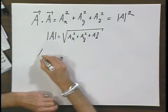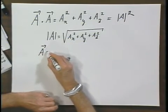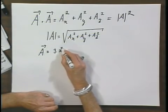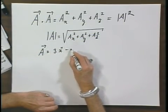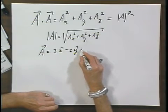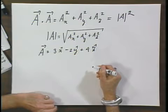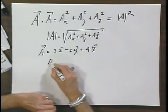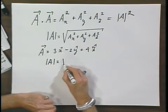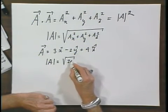So if we take our famous vector a, which was three x roof minus two y roof plus four z roof, then the magnitude of that vector equals the square root of twenty-nine.